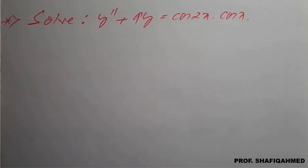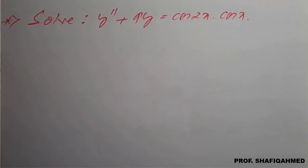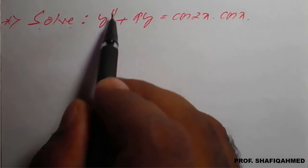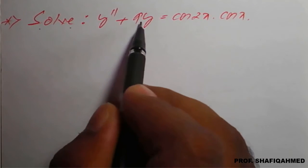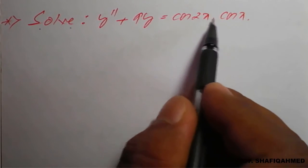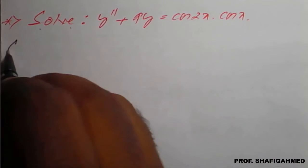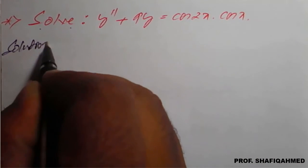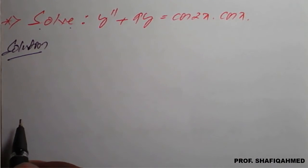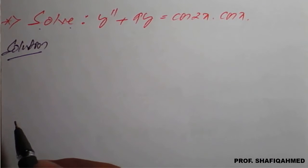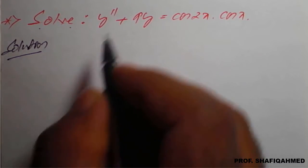Hello everyone. In this lecture, we will see a problem on type 2 of non-homogeneous differential equations. The problem is: solve y'' + 9y = cos(2x)·cos(x). The given differential equation is a non-homogeneous differential equation.